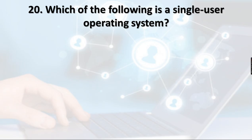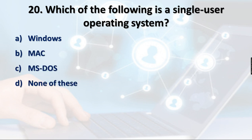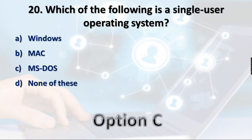Question 20: Which of the following is a single-user operating system? Options: Windows, Mac, MS-DOS, or none. Windows is multi-user and Mac is also multi-user and multi-tasking. MS-DOS is an operating system but it is not multi-user or multi-tasking — it is a single-user operating system. So option C, MS-DOS, is the right answer.